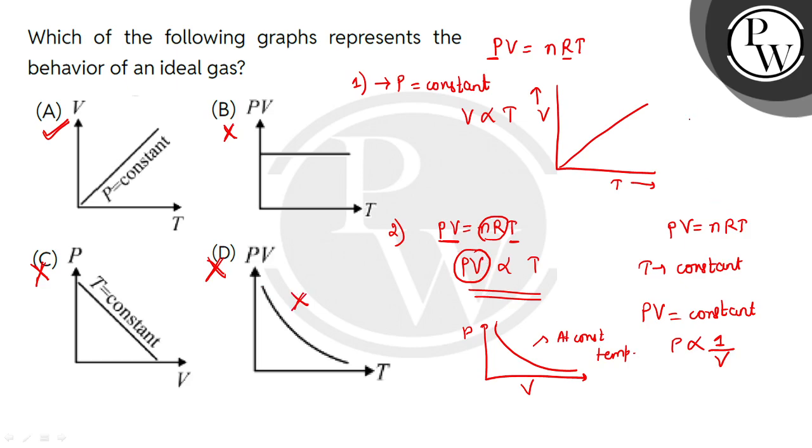We have learned that we can draw all the graphs according to this equation. If you know this equation for an ideal gas, you can analyze all the graphs. When the pressure is constant, the volume would be directly proportional to T.